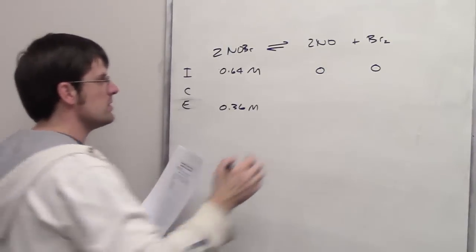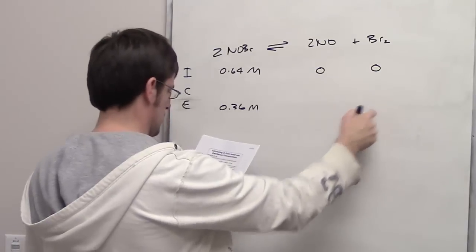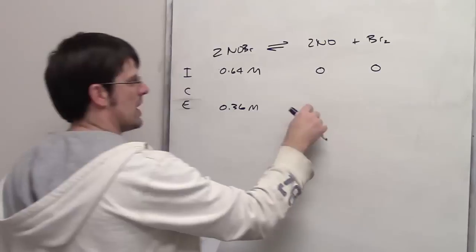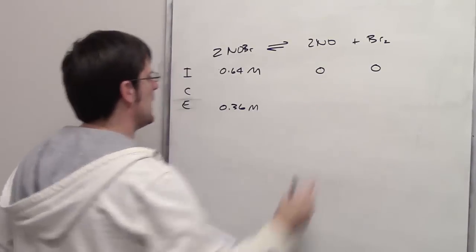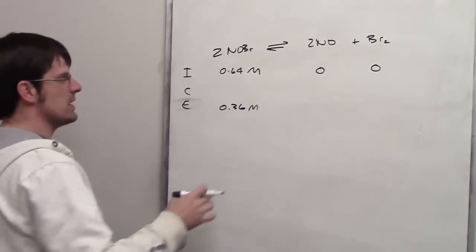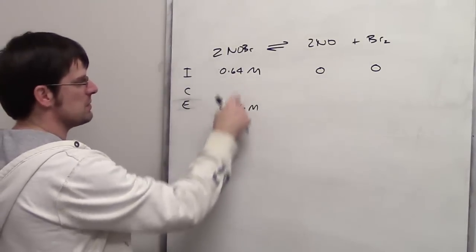How many moles of this and this, respectively, are in the flask at equilibrium? So that's the problem. I'm trying to figure out or fill in these two blanks. Can I do it? Of course I can.